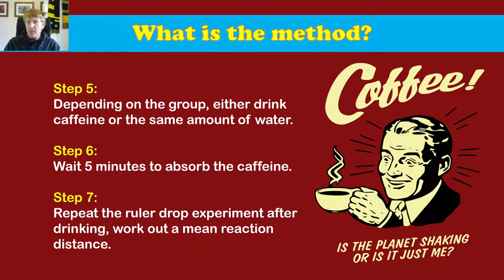Okay, so now that that's done, you're going to go into the experimental part. You're either depending on which group you're in the class, you're either going to drink caffeine, or you're going to drink the same amount of water. And then you're going to wait five minutes to get that caffeine into your blood so you're nice and hyper, hopefully this is towards the end of the class. And then you're going to repeat the same experiment all over again, 10 drops and work out your reaction distance.